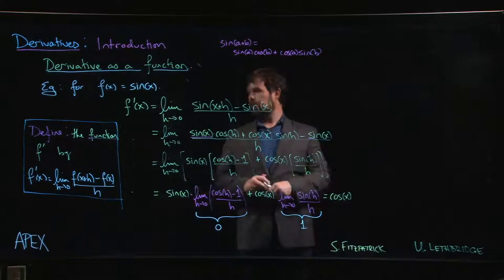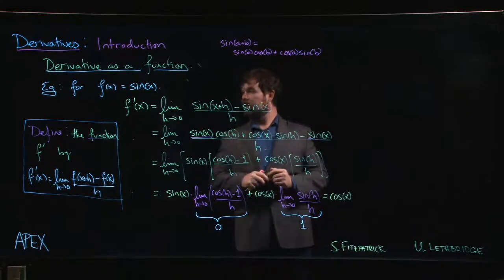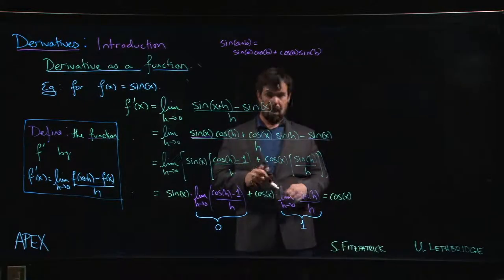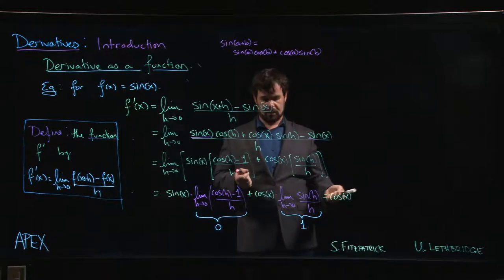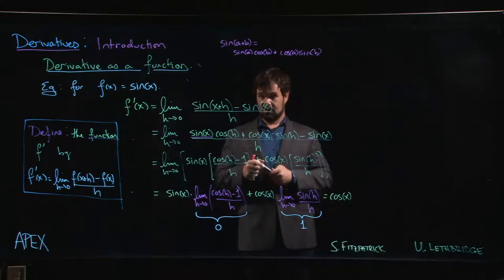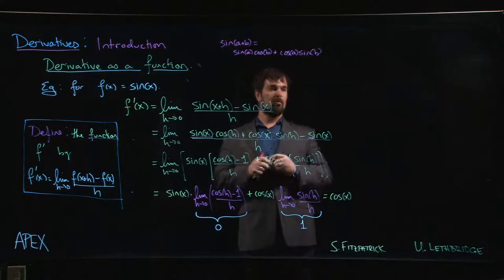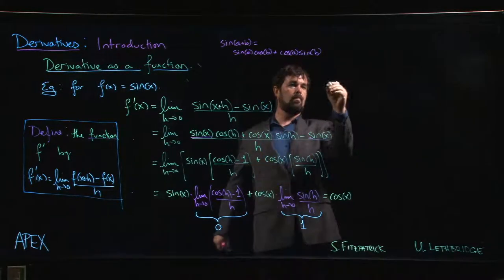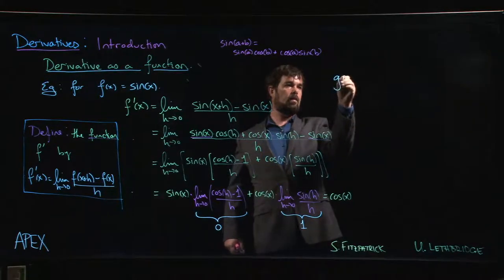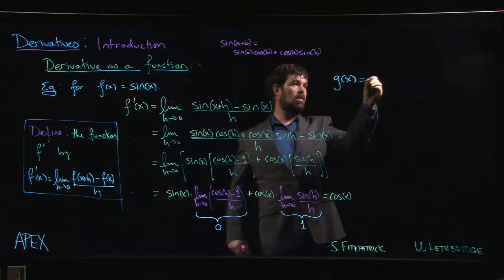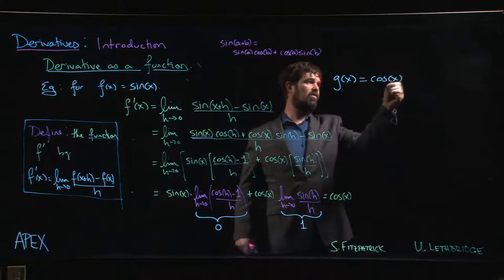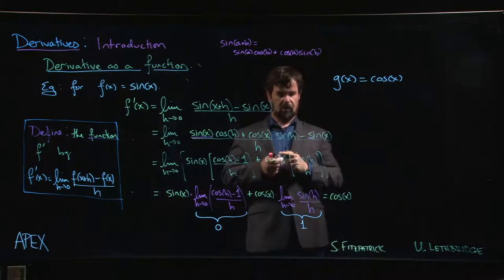We just worked out the derivative of the sine function and found, perhaps to our surprise, hopefully to our delight, that the result gives you cosine. So what if we started with g(x) = cos(x)? What do you get if you start with cosine and go the other way?